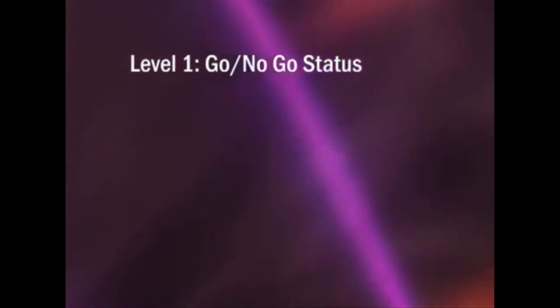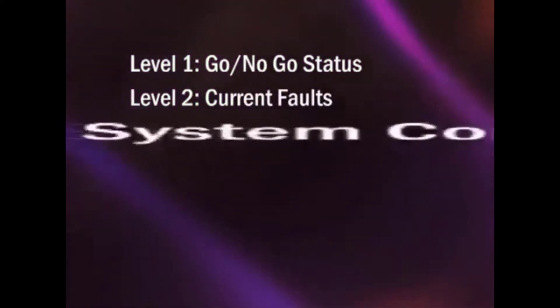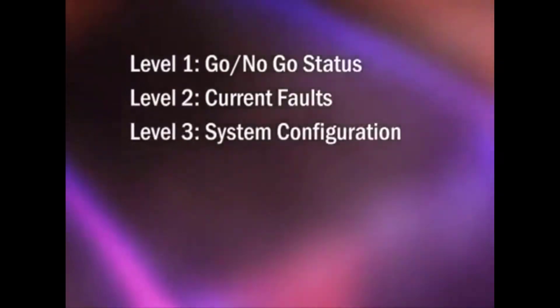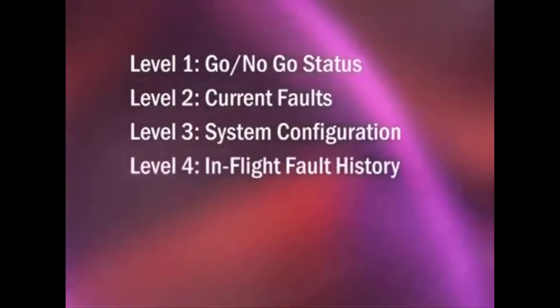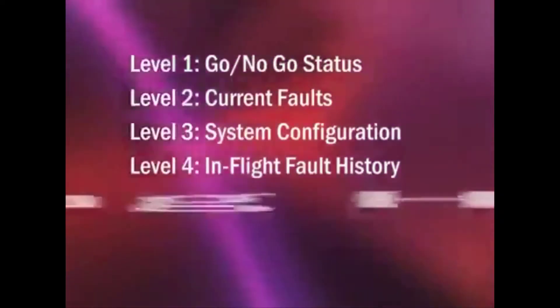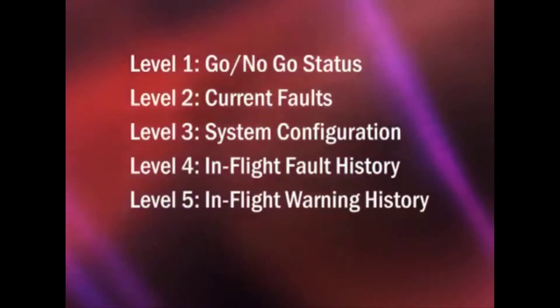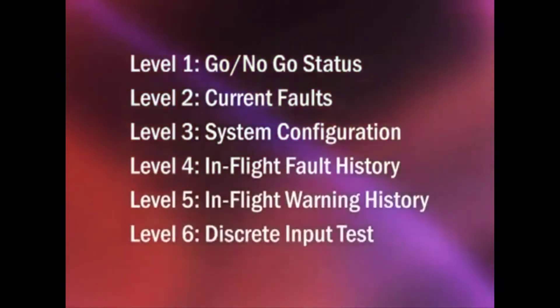The eGPWS has six levels of self-test. Level 1, Go, No-Go Status. Level 2, Current Faults. Level 3, System Configuration. Level 4, In-Flight Fault History. Level 5, In-Flight Warning History. Level 6, Discrete Input Test.